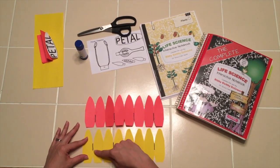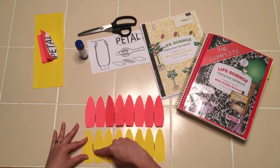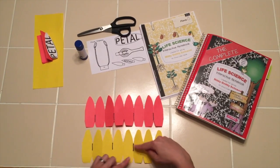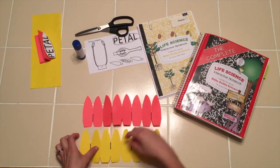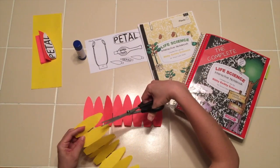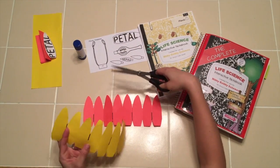On the second half, you want to also draw lines starting from the middle, but this time draw your lines going up every other petal. Then you're going to cut notches in each line, which I've already done.